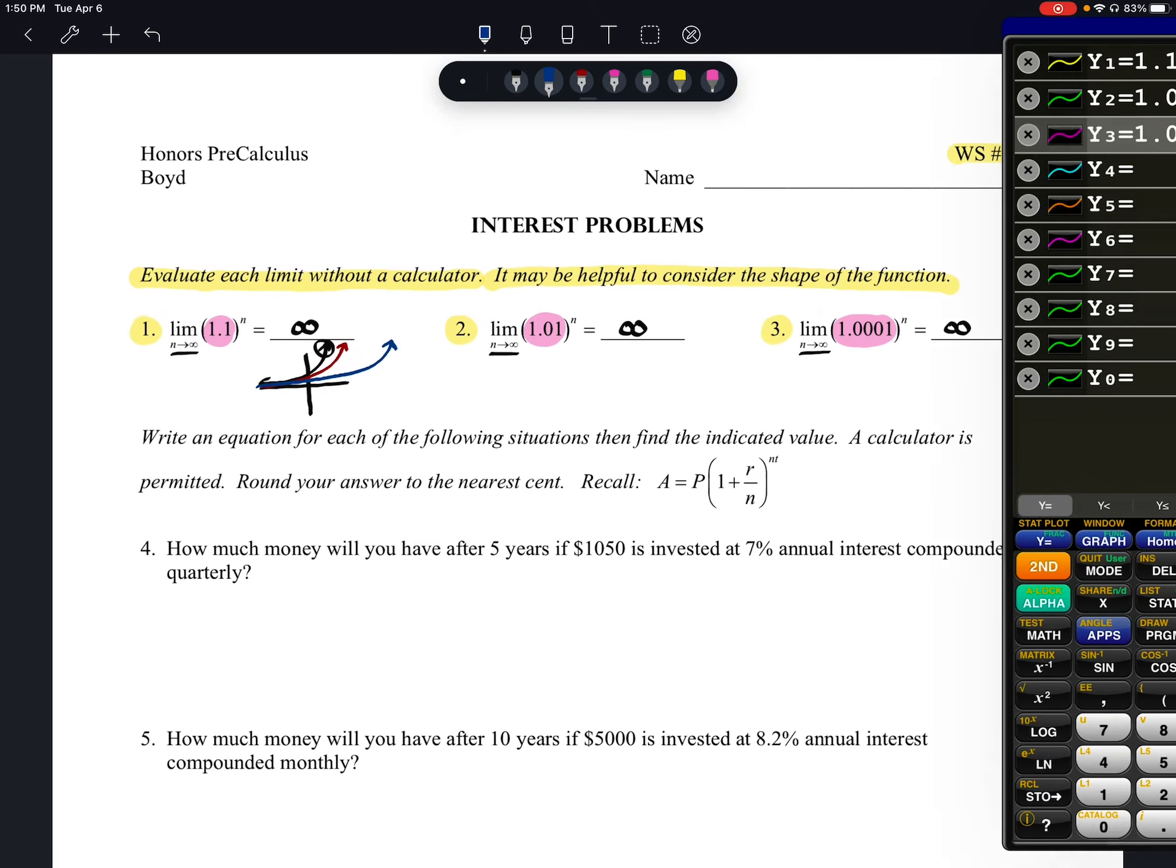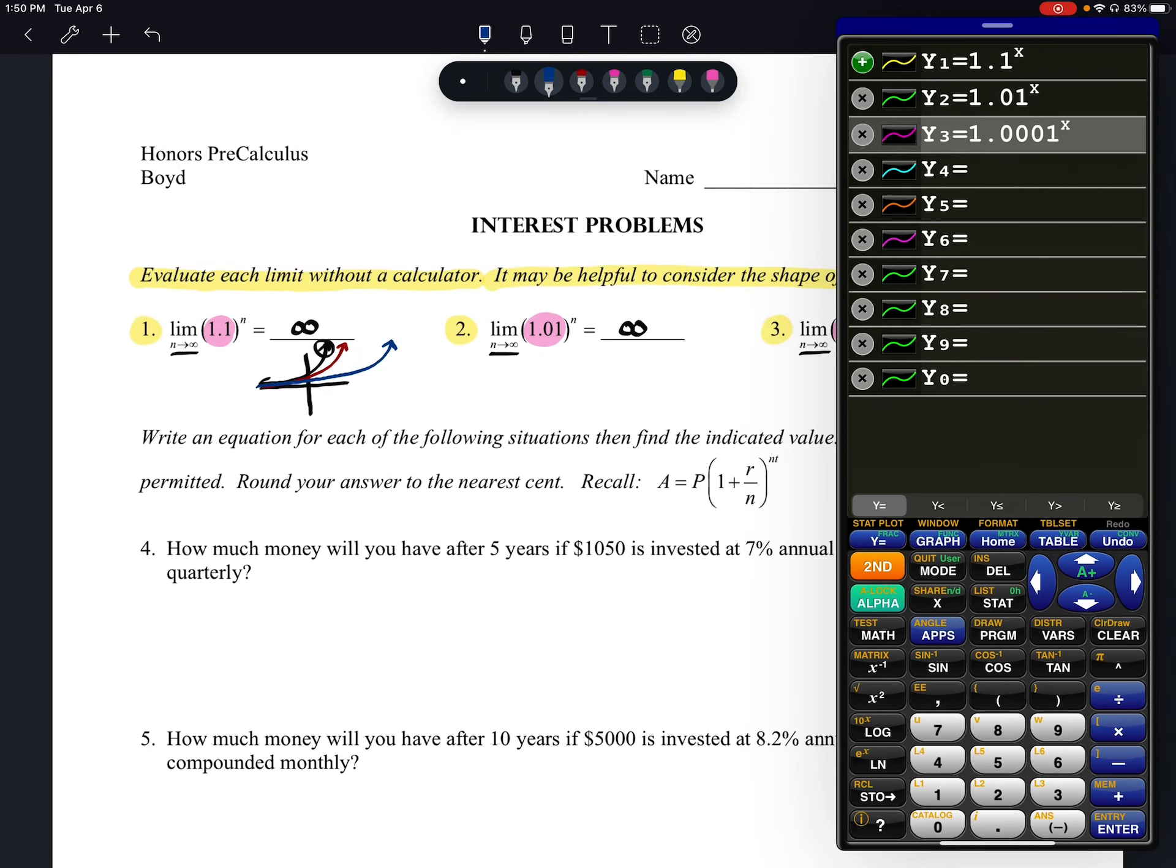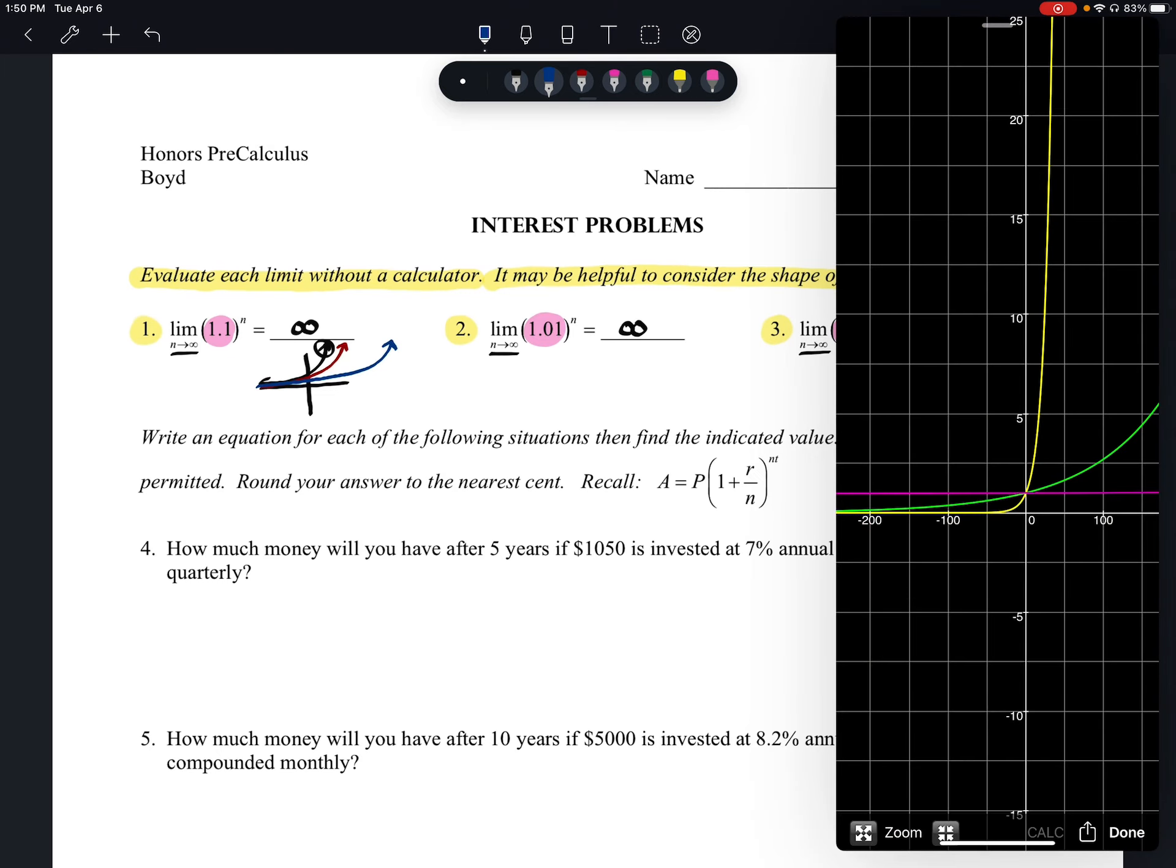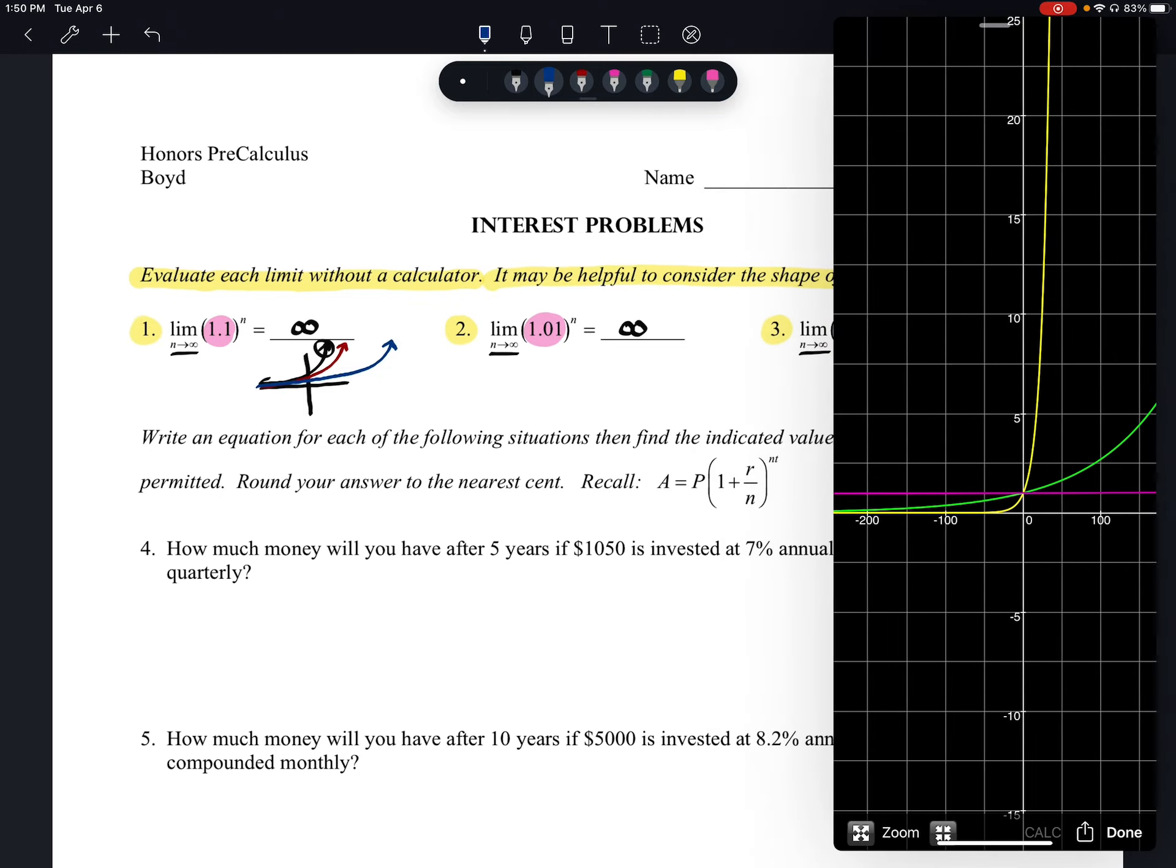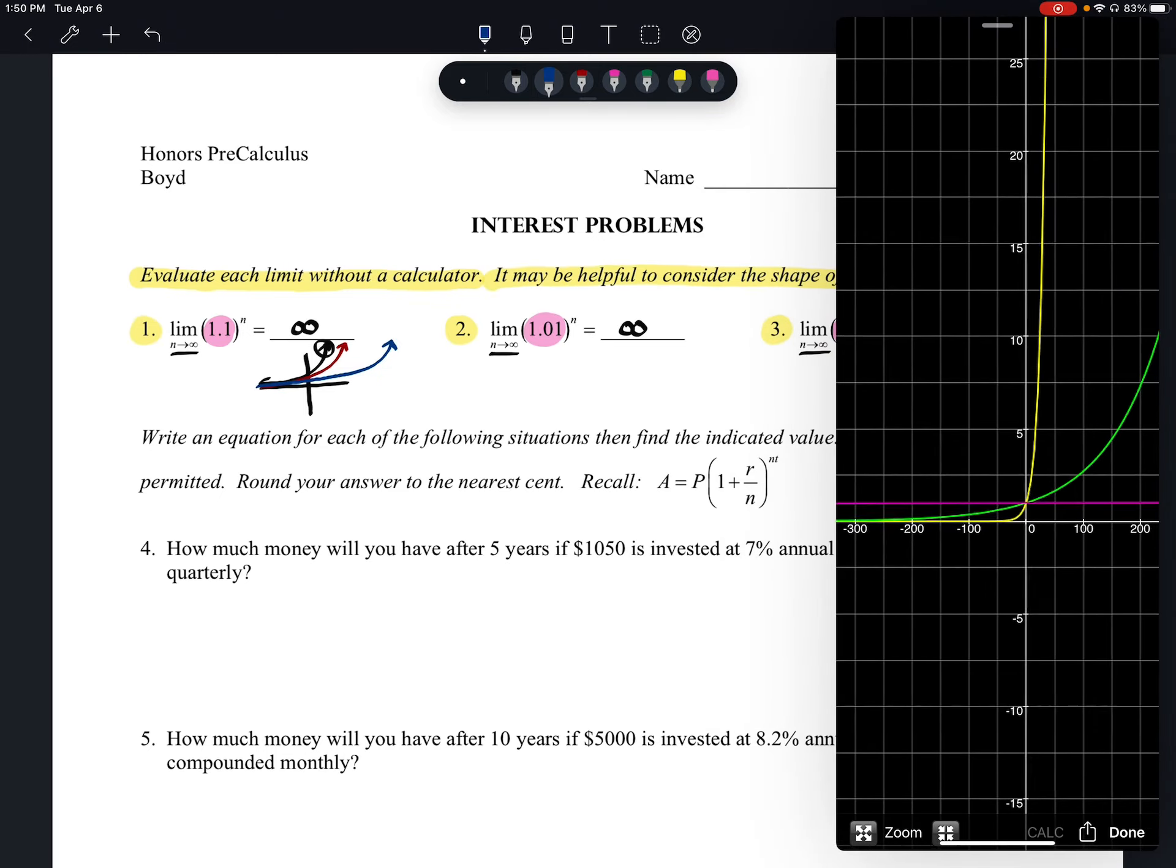In fact, I know it says not to use the graphing calculator, but I've typed all three of these in so that you can see them. And when you graph them, you'll see that yellow one is our 1.1. The green one is 1.01. And then your pink one is our 1.0001. It looks like it's flat and horizontal.